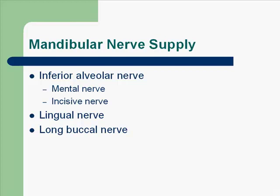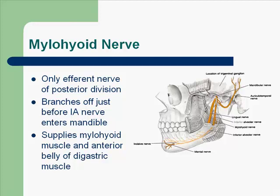The lingual nerve and the long buccal nerve also contribute to mandibular nerve supply. The mylohyoid nerve supplies the mylohyoid muscle and the anterior belly of the digastric muscle. It is the only efferent nerve of the posterior division of V3, and it branches off just before the inferior alveolar nerve enters the mandible.